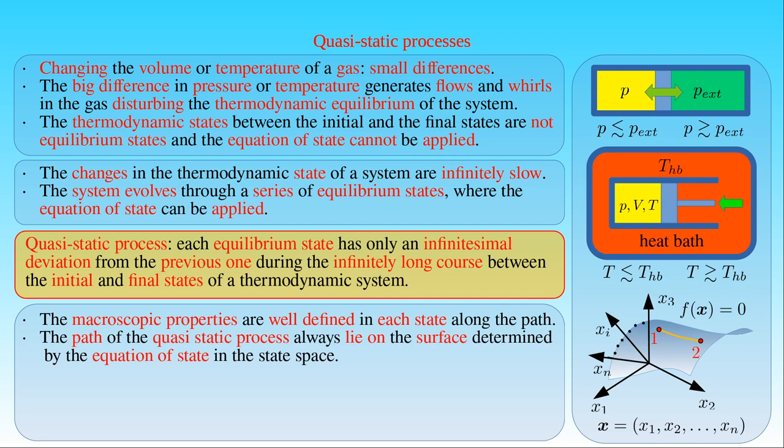The path of a quasi-static process always lies on the surface determined by the equation of state in the state space. Here the equation stating that f(x) equals 0 represents an arbitrary equation of state, which depends on the state vector x of the system. This equation determines an (n-1)-dimensional hypersurface in the n-dimensional state space. Because the initial state 1 and the final state 2 of the thermodynamic process are equilibrium states, the states 1 and 2 are on the surface. In a quasi-static process, the series of states connecting the initial and the final states are also equilibrium states and they are also on the surface. Any finite difference between the state variables in two different states can be connected by such a series of states on the surface, which have infinitesimal differences in their state variables.